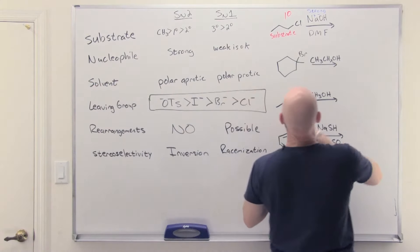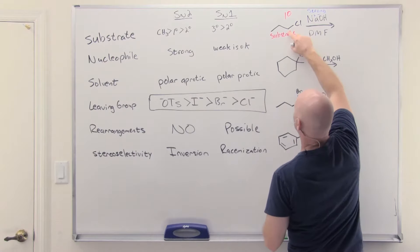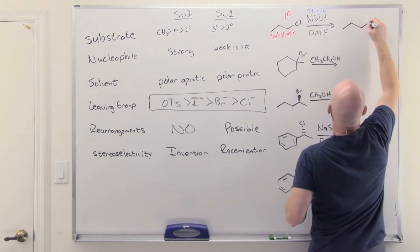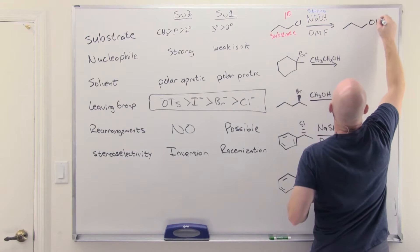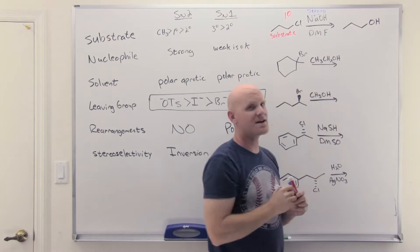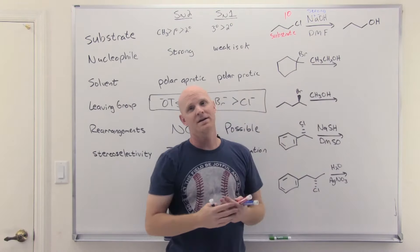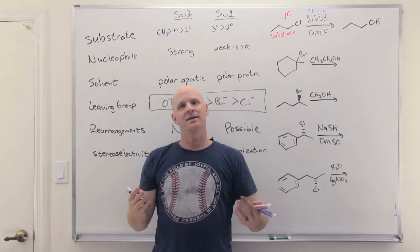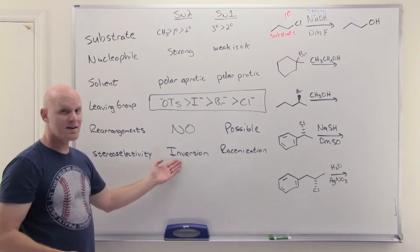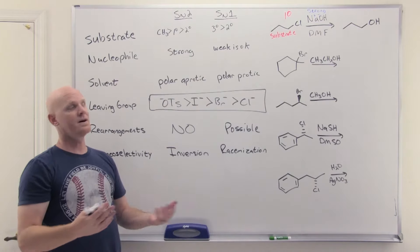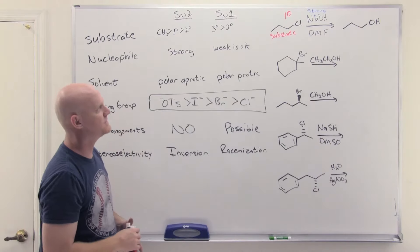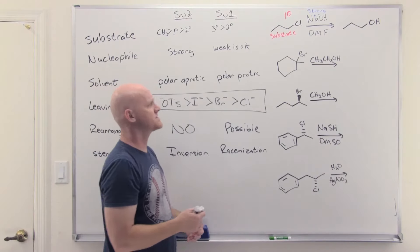We do backside attack. It's occurring at a carbon that is not a chiral center, so no need to worry about inversion. Hydroxide does backside attack and replaces that chlorine, putting the OH there. If it had occurred at a chiral center we would have noticed inversion, but no chiral center is involved in this example.